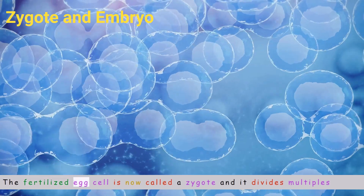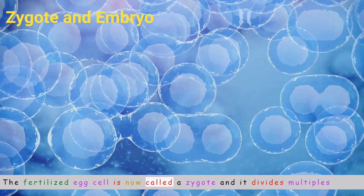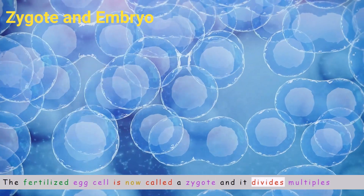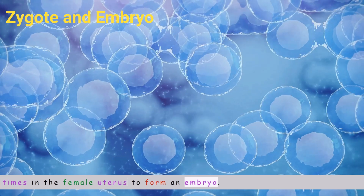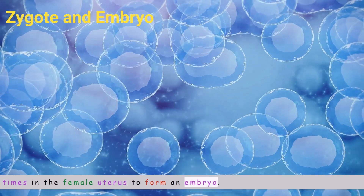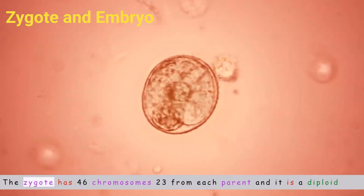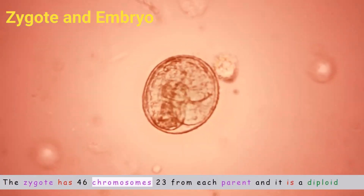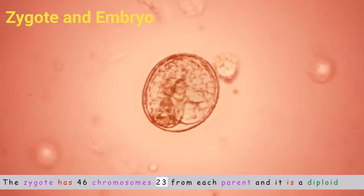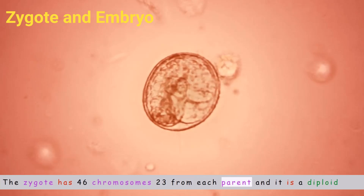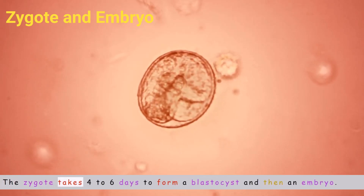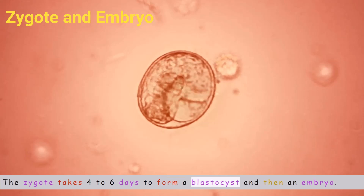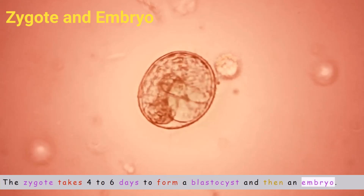The fertilized egg cell is now called a zygote, and it divides multiple times in the female uterus to form an embryo. The zygote has 46 chromosomes from each parent and is a diploid cell. The zygote takes four to six days to form a blastocyst and then an embryo.